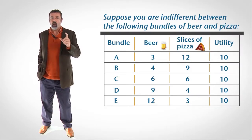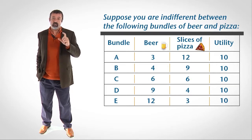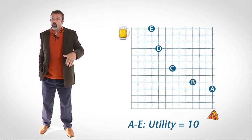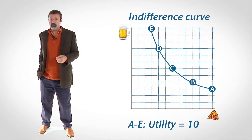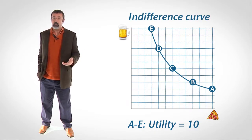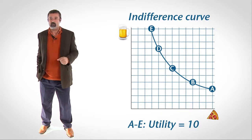Suppose you are indifferent between several specific bundles of beer and pizza — that is, each bundle gives you the same amount of utility. We can plot these bundles on our graph, and notice that the bundles trace out a curve. We call this an indifference curve. It shows all the various bundles of beer and pizza that give you the same utility. By definition, you are indifferent among the bundles that are along this indifference curve. The concept of indifference is independent of income and prices.